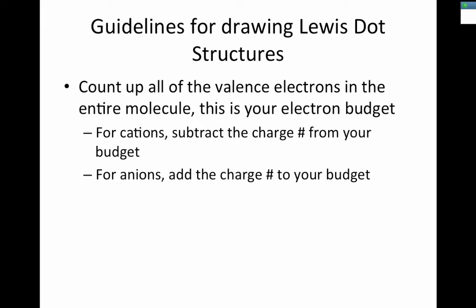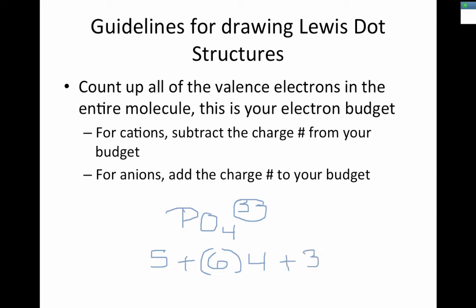Let's take a look at an anion — a negatively charged group of elements. For PO4 with a three-minus charge, I want to know how many valence electrons are in that molecule. Phosphorus has five valence electrons. Oxygen again has six valence electrons, and there are four of them — that's 24. Because electrons are negatively charged, I have to add three electrons to my total budget to account for the charge. So this whole molecule has 32 valence electrons.